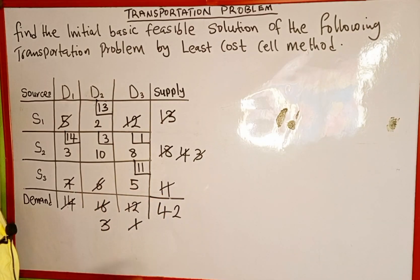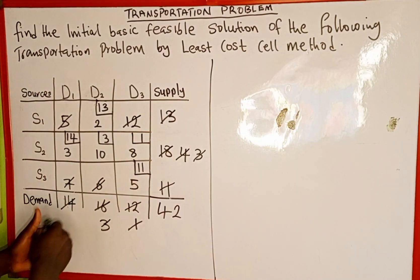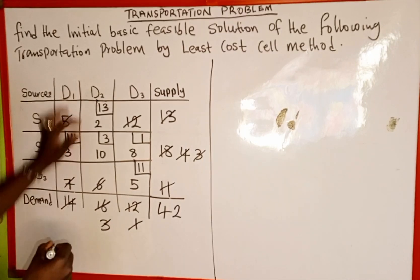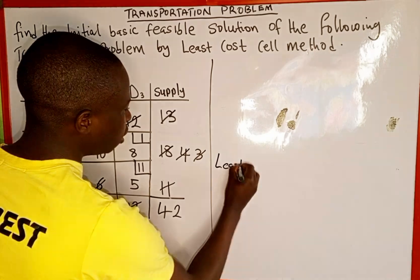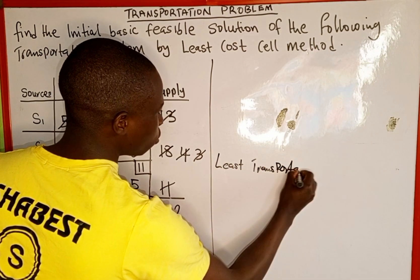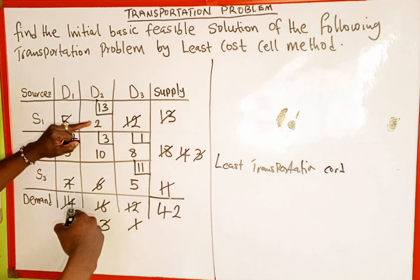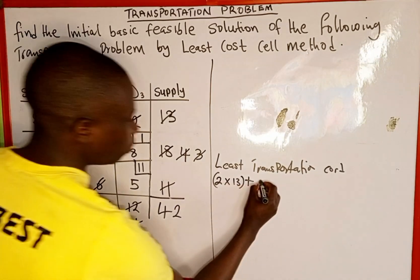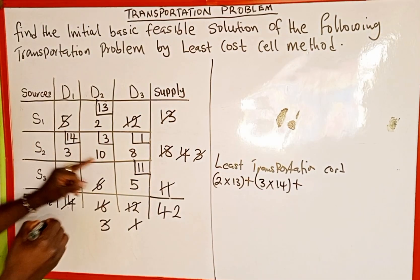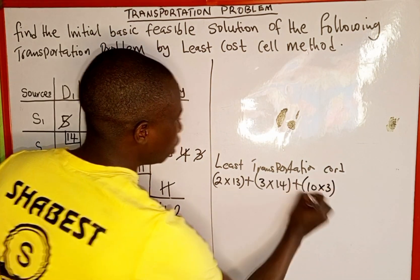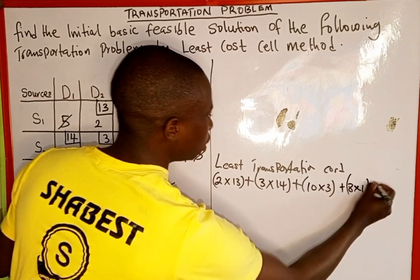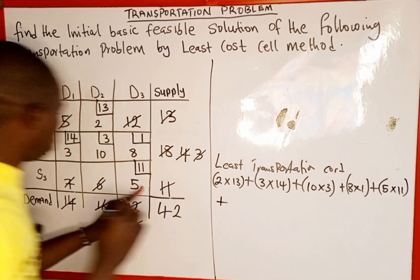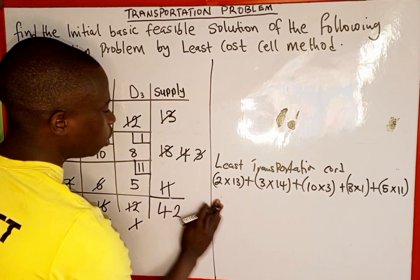Now we find the least transportation cost. Wherever we made an allocation, we multiply the allocated quantity by the corresponding cell cost. The allocations are: cell cost 2 with quantity 13, cell cost 3 with quantity 14, cell cost 10 with quantity 3, cell cost 8 with quantity 1, and cell cost 5 with quantity 11. So the total cost is: (2×13) + (3×14) + (10×3) + (8×1) + (5×11).